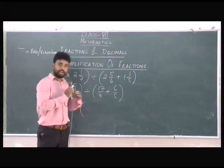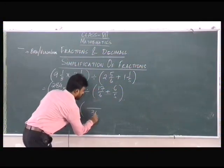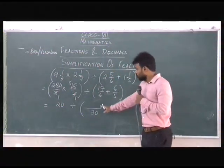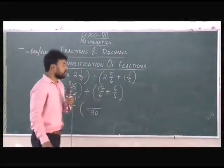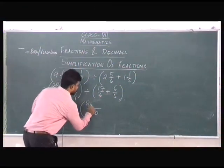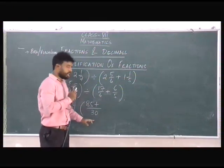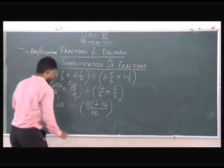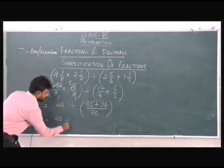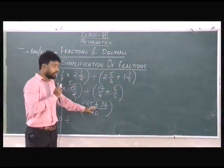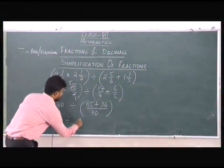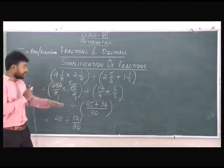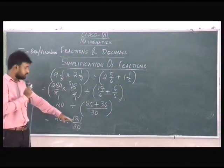For the other bracket, we take the LCM of 6 and 5, which is 30. 6 goes 5 times: 5 into 17 gives 85. 5 goes 6 times: 6 into 6 gives 36. We then add 85 and 36, which gives 121 by 30.